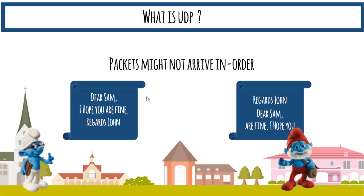For example, John is on one side and Sam is on the other. John sends the message 'Dear Sam, I hope you are fine. Regards, John.' But Sam receives something like 'Regards John dear Sam are fine I hope' — completely disordered, and some parts may even be missing. There is no method in UDP to count or reorder packets; sometimes packets get lost and sometimes duplicate packets arrive.